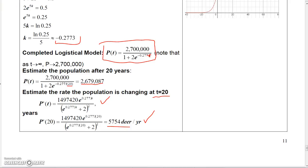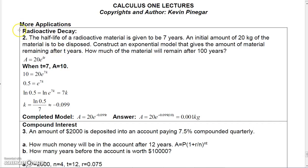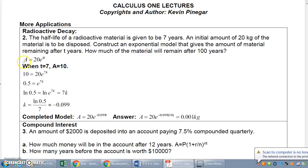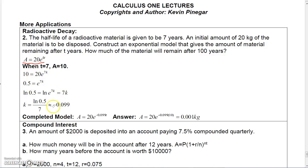Here's a radioactive decay problem — more of an algebra problem than calculus. You're given information to solve for the constant k and complete the model. The answer is 20 e to the negative 0.099t. Replacing t with 100 gives approximately 0.001k for the final answer to the question asked.